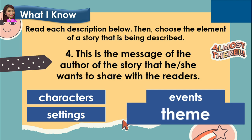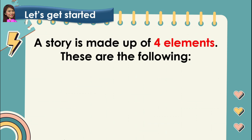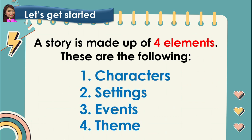How many correct answers did you get? Now, let's get started. A story is made up of four elements. These are the following: number 1, characters; number 2, settings; number 3, events; and number 4, theme. Now, let's talk about these elements one by one.